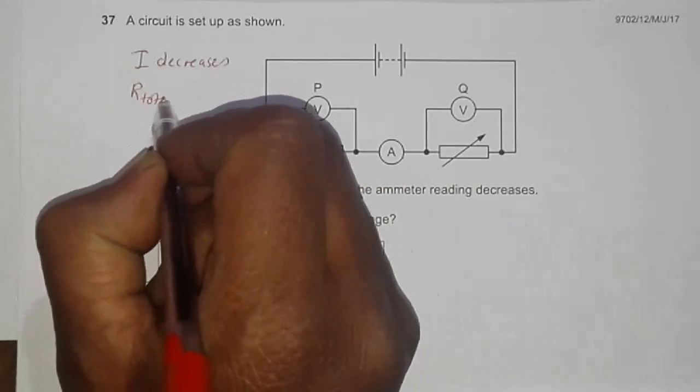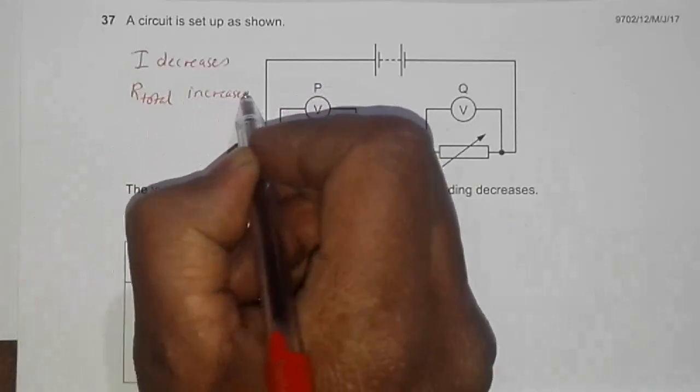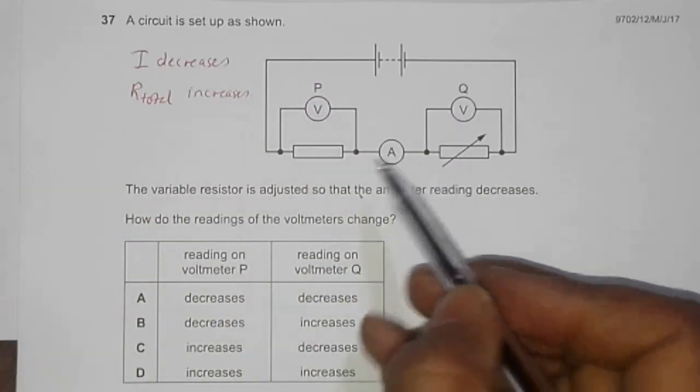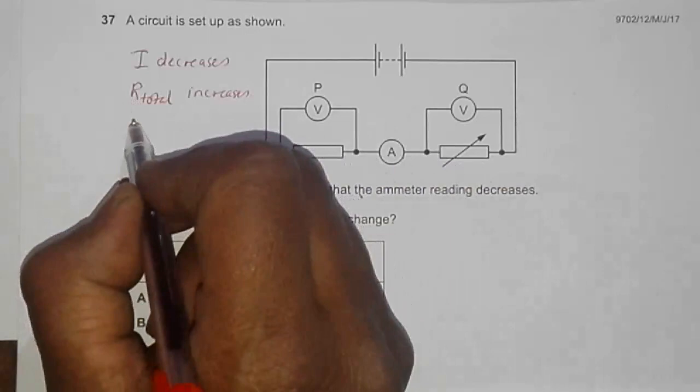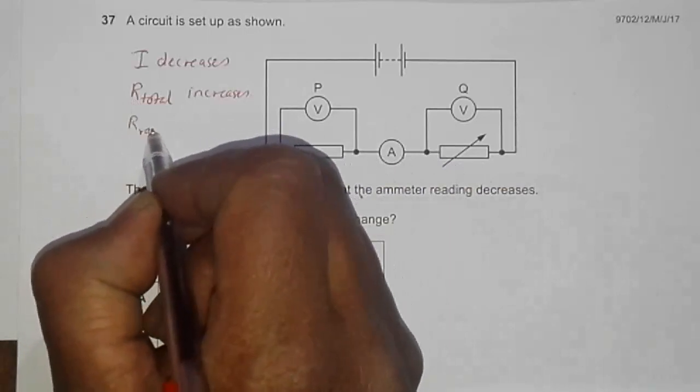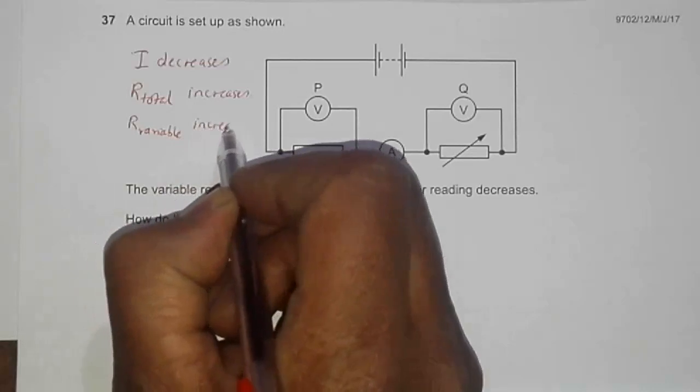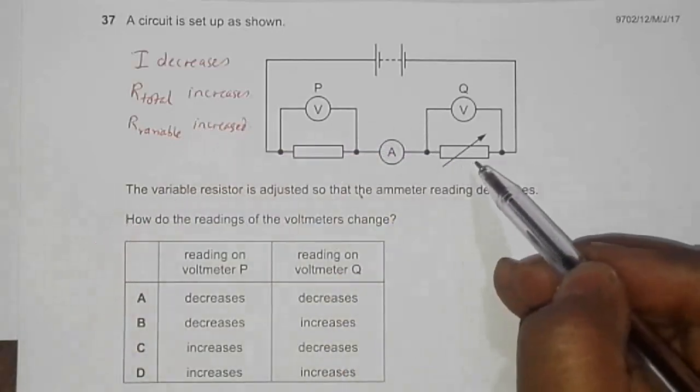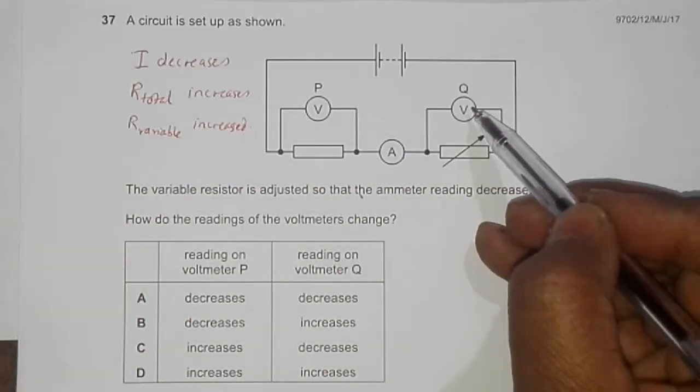That means R_total should have increased. In order to achieve that, since this is a fixed resistor, we must have increased the resistance of this variable resistor.